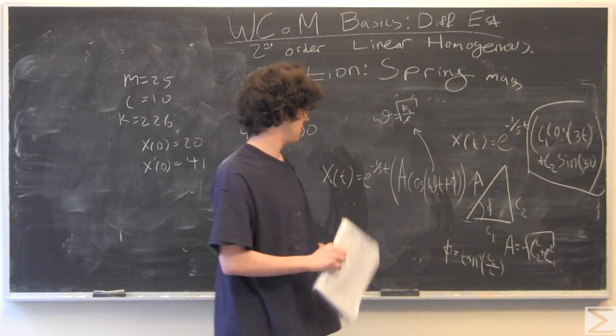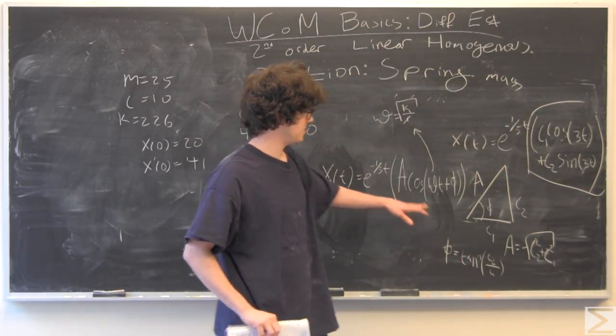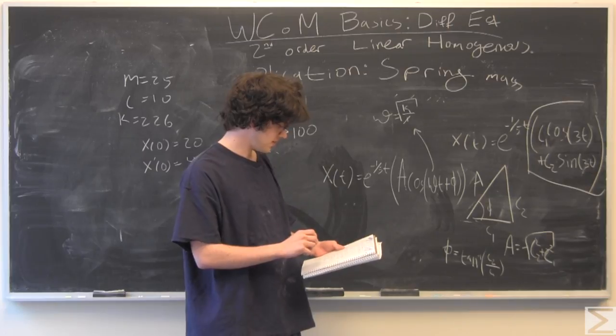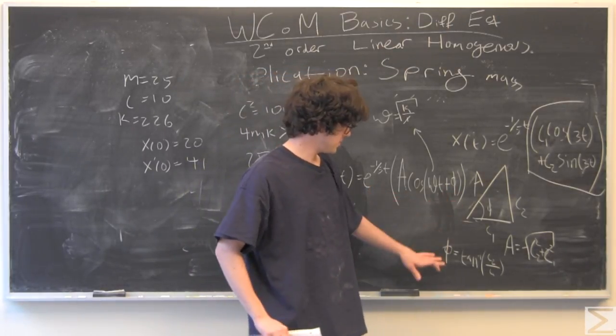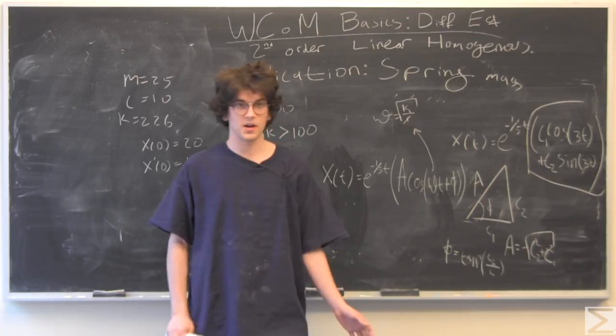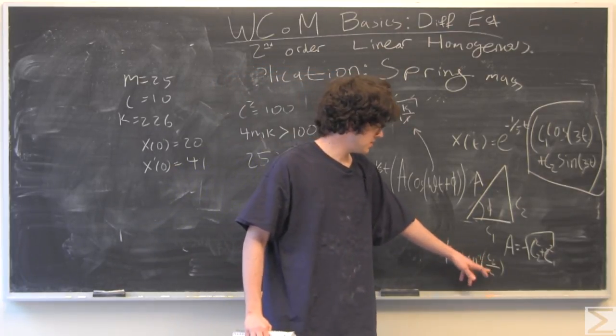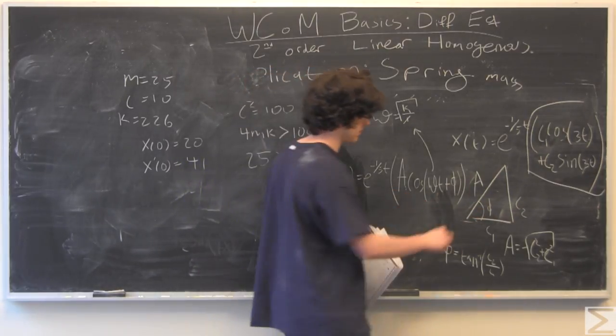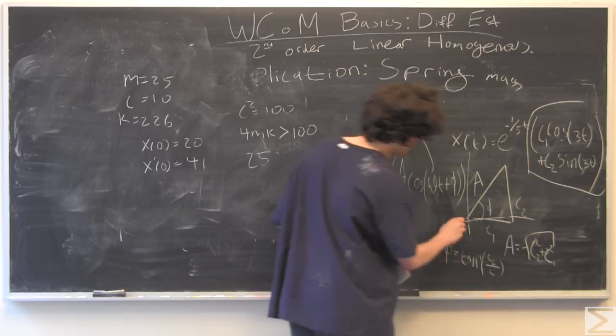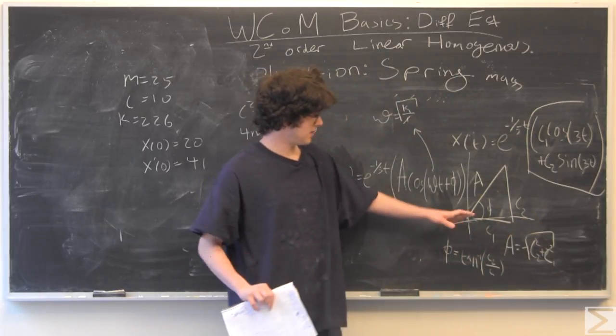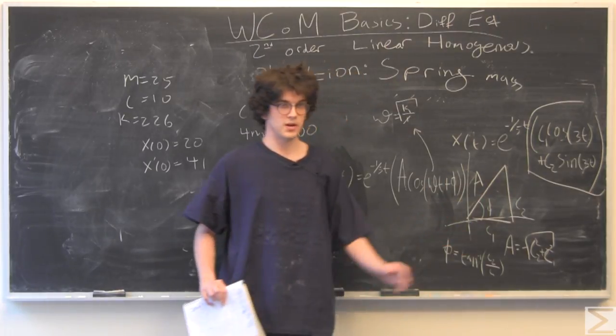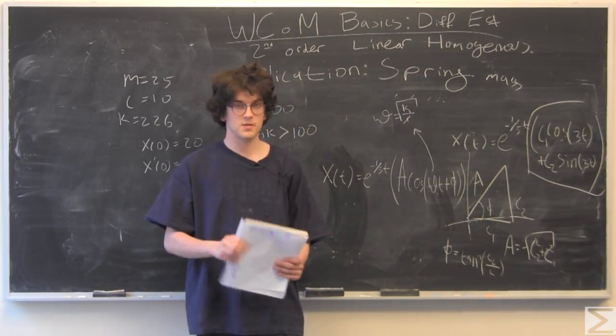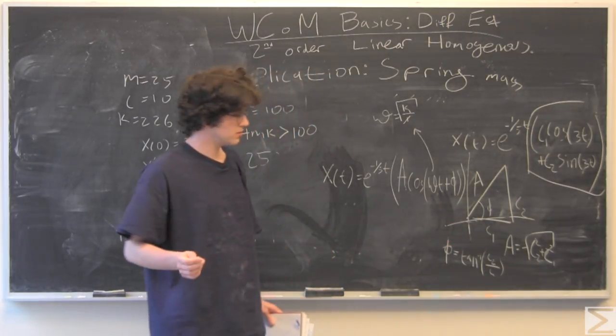And so substituting this amplitude phase form into our cosine and sine, we have our phi, which we found out. We might want to be careful with the phi. If c2 or c1 is negative, make sure that you're putting phi in the right quadrant. Think of this as, if it's negative, it's just going to be the mirror image of that phi.